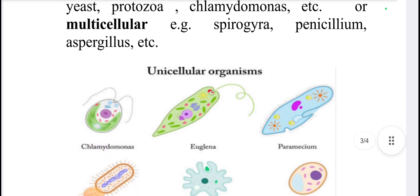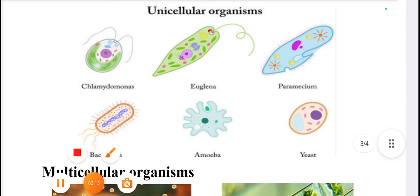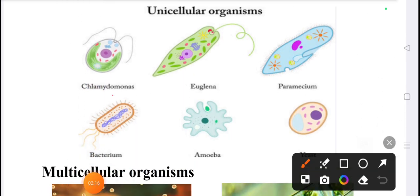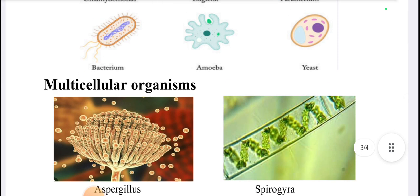Unicellular microorganisms include Chlamydomonas, Euglena, Paramecium, bacterium, Amoeba, and yeast.